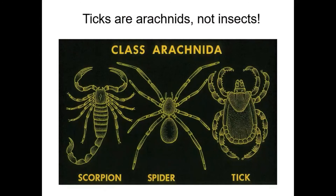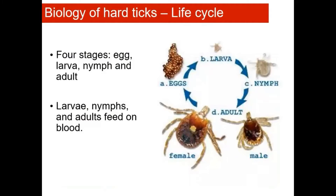Ticks are arachnids, not insects. You can tell this because ticks in the adult and nymphal stages have eight legs, unlike insects, which generally only have six legs. So ticks are actually more closely related to spiders than they are to insects.